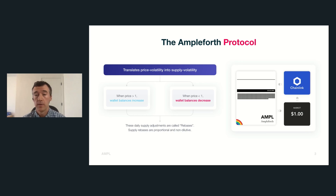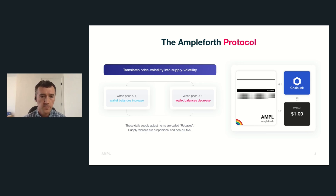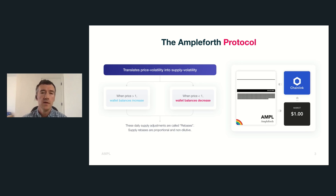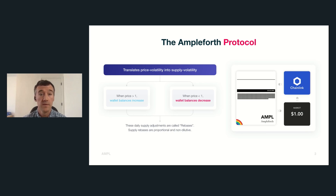The supply policy gets its data through an oracle integrated with Chainlink. It uses the 24-hour volume-weighted average price, making it very robust in terms of the data feed used to make supply decisions.